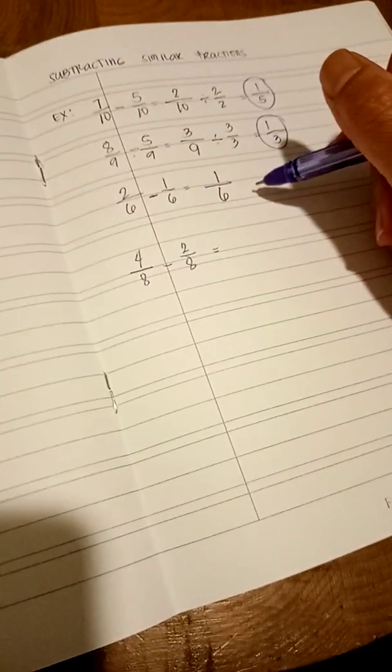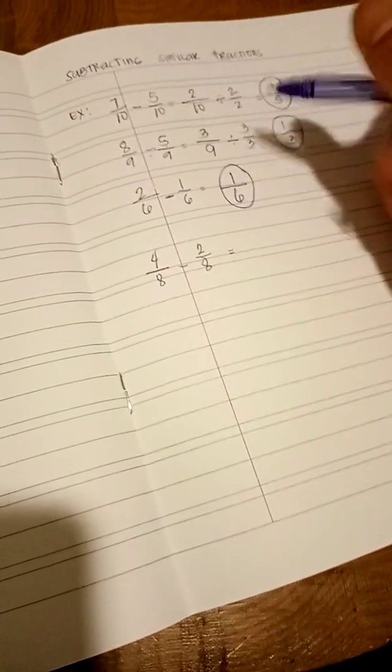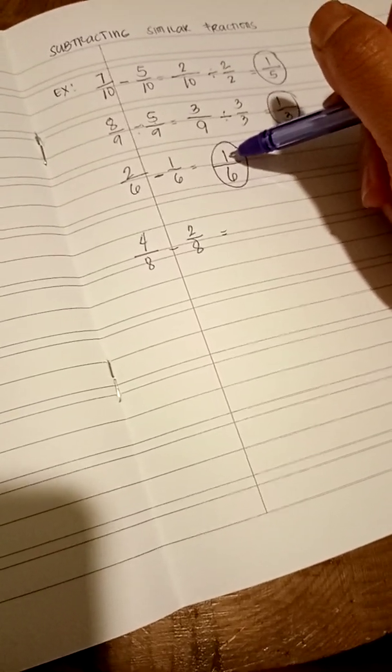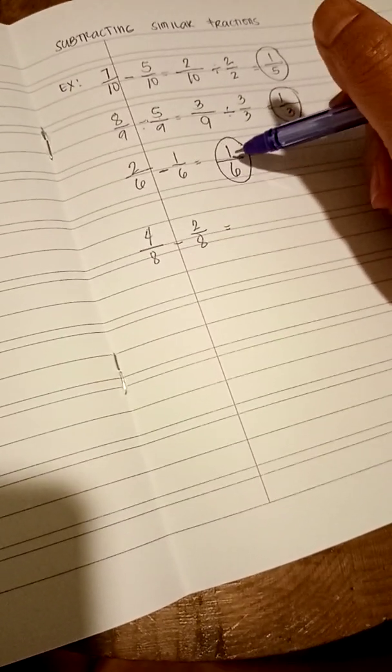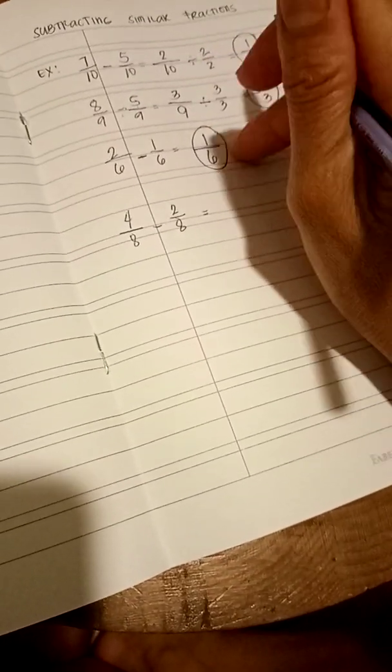Do we need to simplify this? No, because this is the simplest form. We have nothing. We cannot divide this into 1 or 2. We cannot divide it by any numbers. So, this is the simplest form.